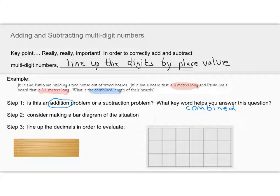Step two says consider making a bar diagram of the situation. A bar diagram simply helps us visualize whether we are adding or subtracting. In this situation, the bar diagram is just going to be two bars that are connected to show that we are going to put together the two amounts. This bar represents 8 and this one represents 3.1, and the idea is that I am looking to put them together to get my answer.